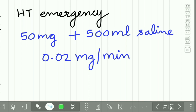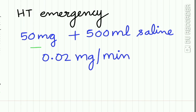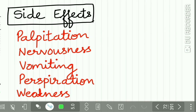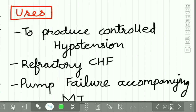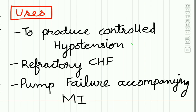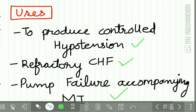Sodium nitroprusside is used mostly in hypertensive emergencies. 50 mg is added to 500 mL of saline and infused at 0.02 mg per minute. Side effects include palpitation, nervousness, vomiting, perspiration, and weakness.